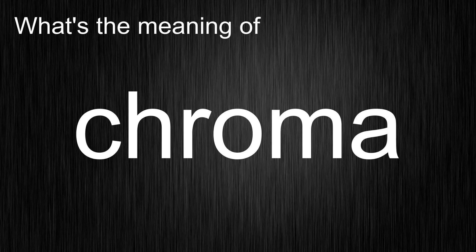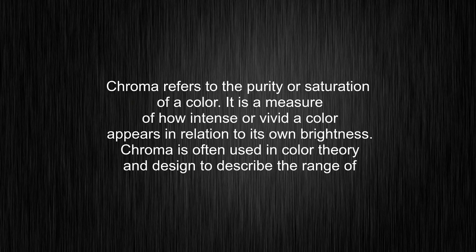What's the meaning of chroma? Chroma refers to the purity or saturation of a color. It is a measure of how intense or vivid a color appears in relation to its own brightness. Chroma is often used in color theory and design to describe the range of colors within a specific hue.